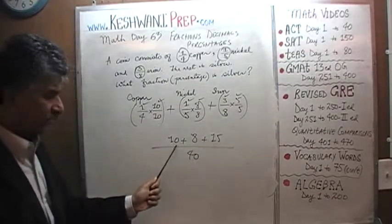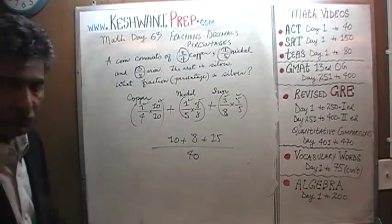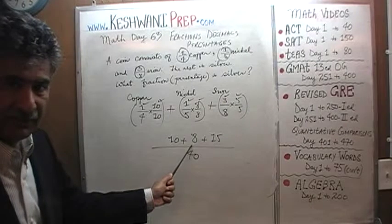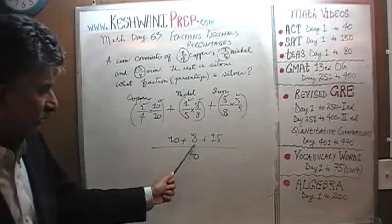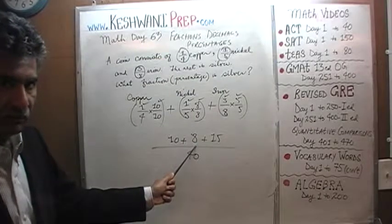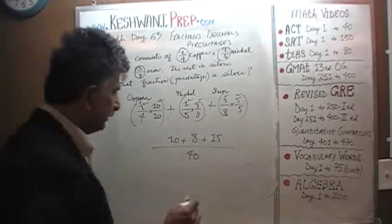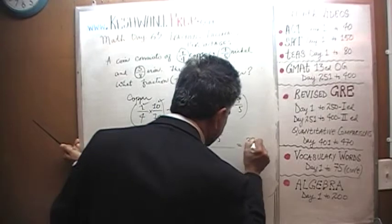15 plus 10 is 25. Another 10 would have been 35, but we don't have 10, we have 8. So instead of 35, it's going to be 33.